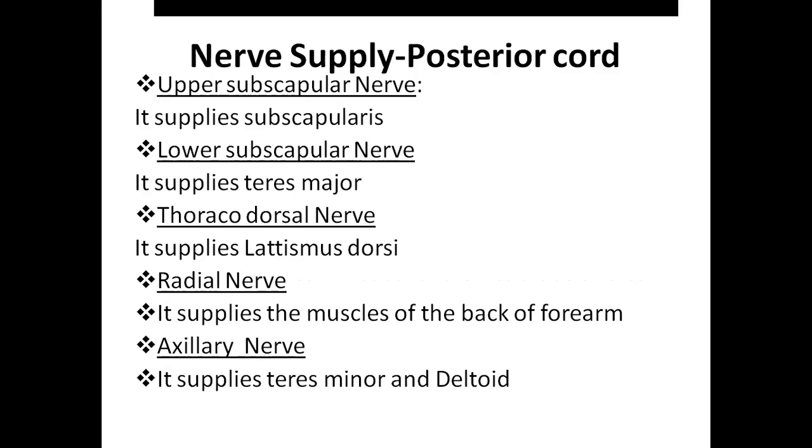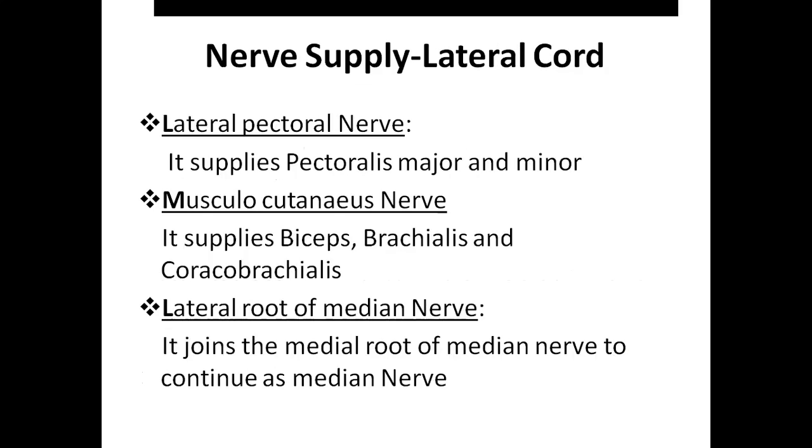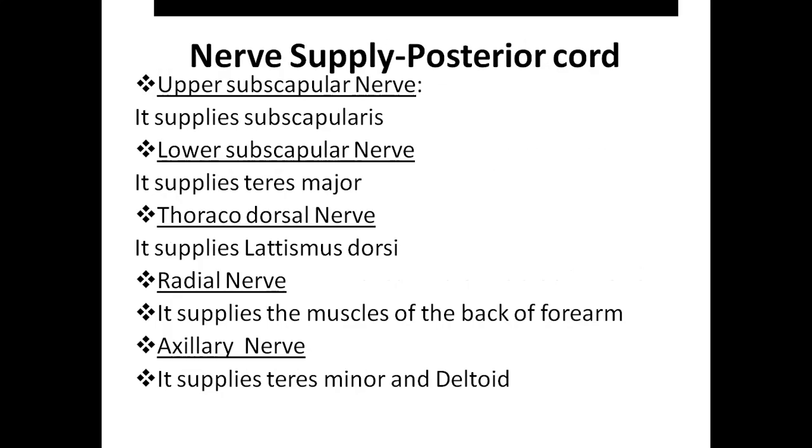The axillary nerve supplies teres minor and deltoid. These are the branches of the lateral cord, medial cord and posterior cord.